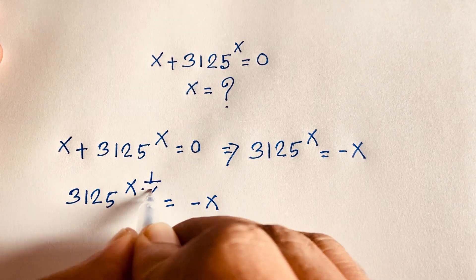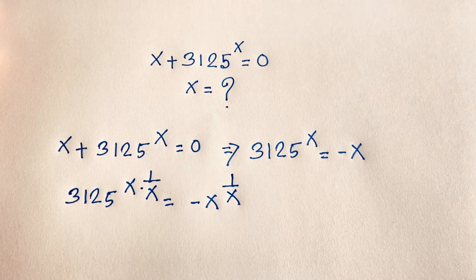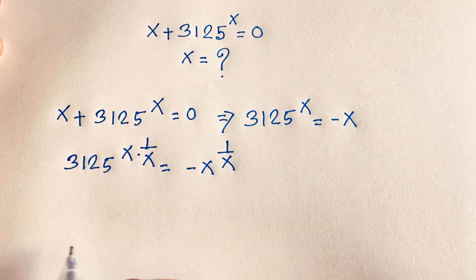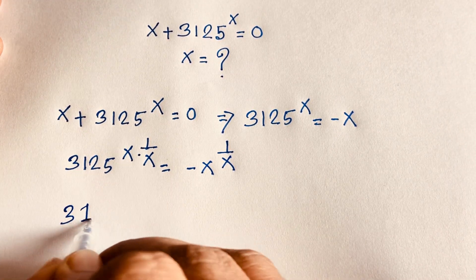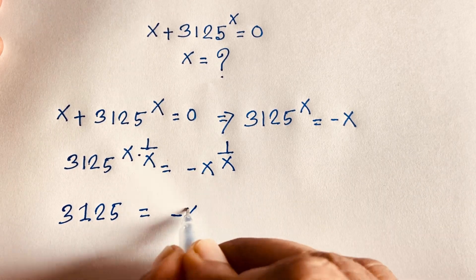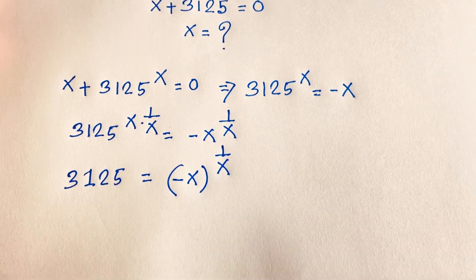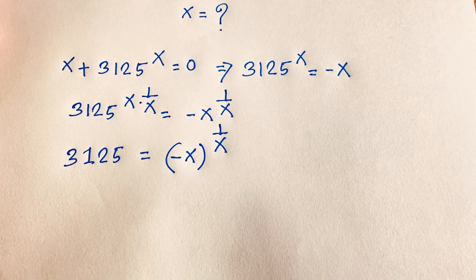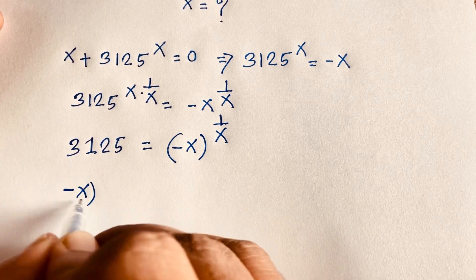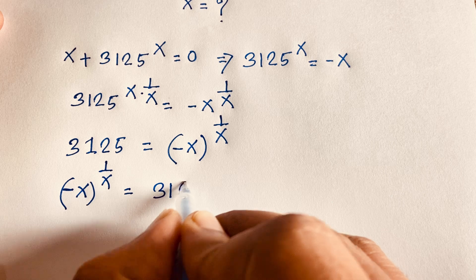Now I apply both sides the exponent 1 over x. This x in the exponent is cancelled out, and we find that 3125 is equal to negative x to the power 1 over x, which we can write as: minus x to the power 1 over x is equal to 3125.